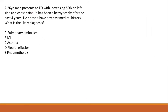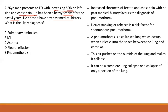A 26-year-old heavy smoker presents with increasing shortness of breath and left-sided chest pain, with no past medical history. Given the history of smoking and these symptoms, you are thinking of spontaneous pneumothorax. Your answer should be E.